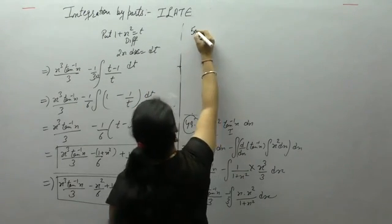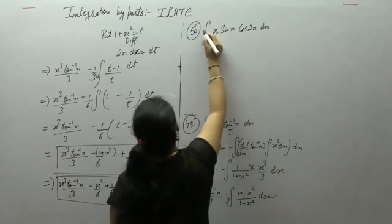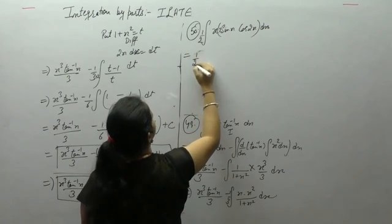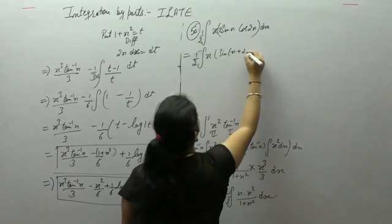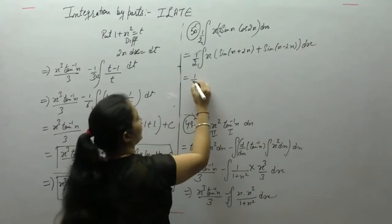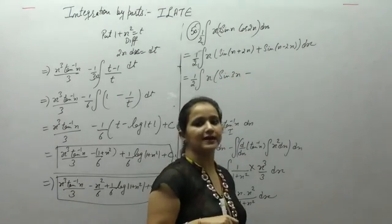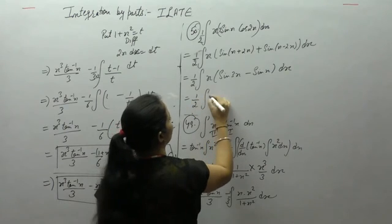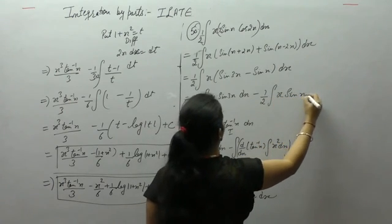Next is the integral of x² sin x cos 2x dx. Multiply and divide by 2, then apply the formula: 2 sin A cos B equals sin(A plus B) plus sin(A minus B). This gives 1 by 2 times x² into sin 3x plus sin(minus x). Since sin of minus theta equals minus sin theta, we get 1 by 2 integral of x² sin 3x minus 1 by 2 integral of x² sin x dx.